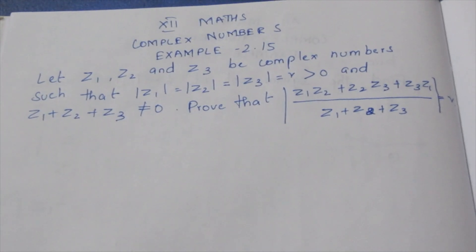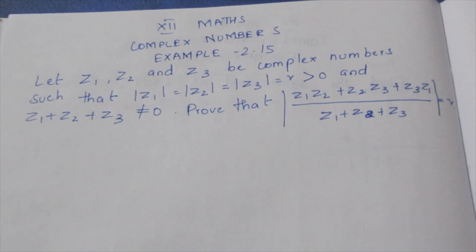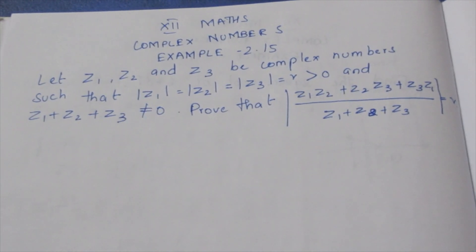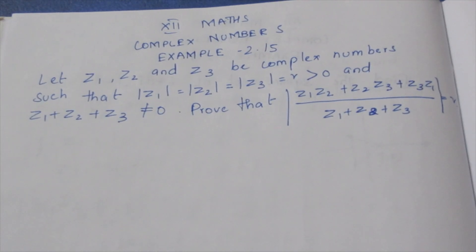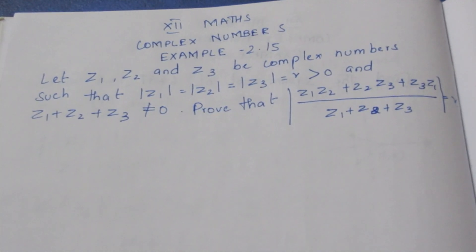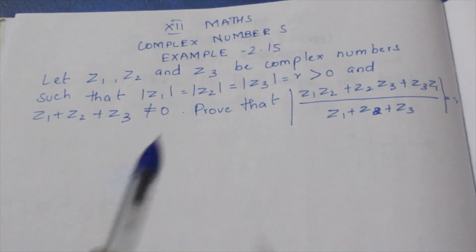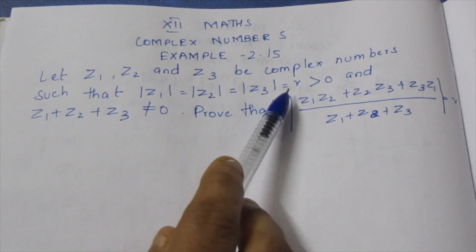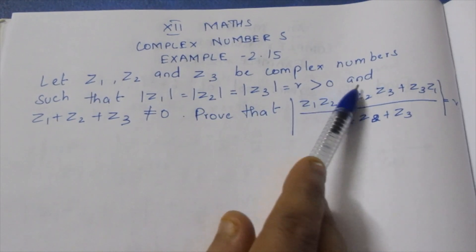Hello viewers, I am Ikely. In a 12th-standard complex numbers example 2.15 video, let Z1, Z2, Z3 be complex numbers such that modulus Z1 equal to modulus Z2 equal to modulus Z3 equal to R.